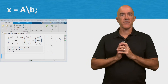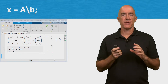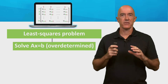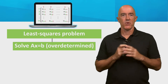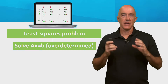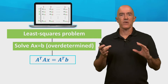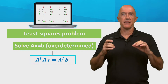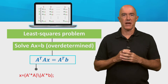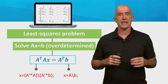We just learned how to solve a system of linear equations using the backslash operator. The backslash operator can also solve the least squares problem. The least squares problem is the solution of AX equals B when A has more rows than columns — more equations than unknowns — in other words, an over-determined system of equations. To solve, one forms the normal equations: A transpose A times X equals A transpose B. You could solve the normal equations directly, but it's easier to just use the backslash operator.